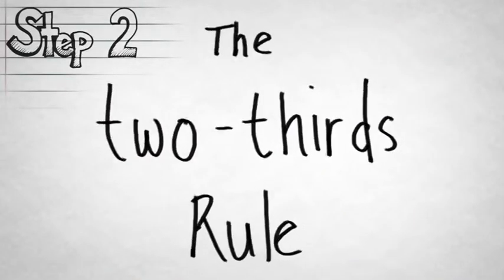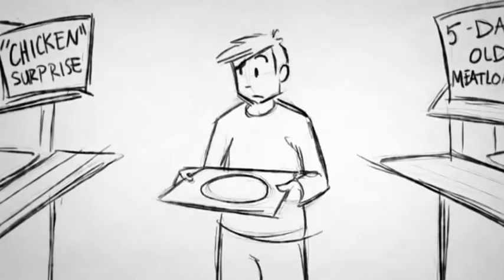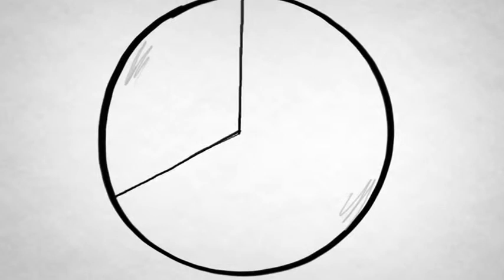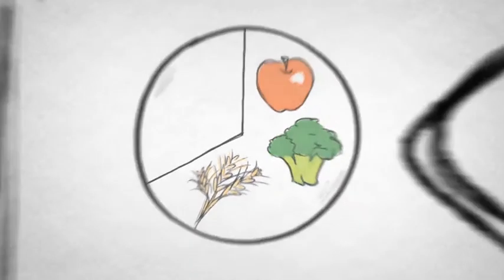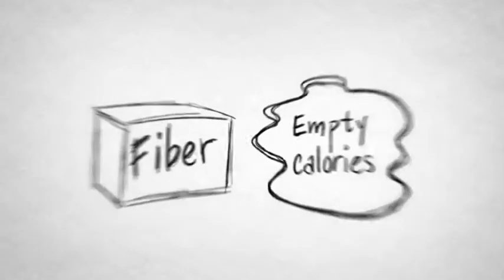Step 2. The 2-thirds rule. Navigating your dining hall is one of the trickiest obstacles to maintaining a healthy weight. Follow this simple rule for filling your tray as you go through the buffet line. 2-thirds of your plate is reserved for grains, vegetables, and fruits. That way, you fill up on fiber, not empty calories. But you don't totally cut yourself off from the foods that you love.